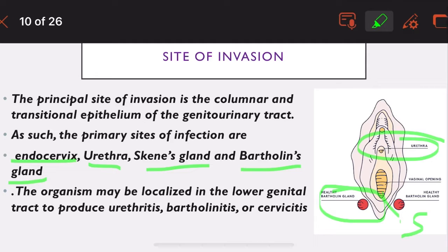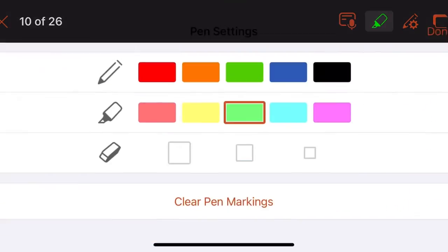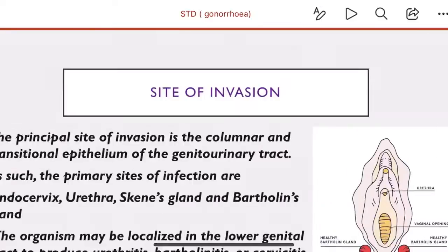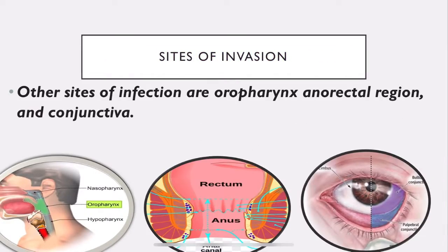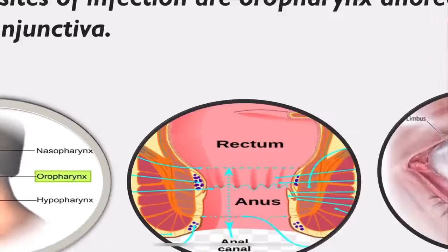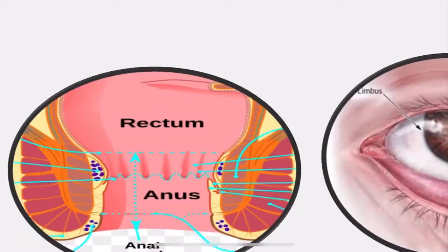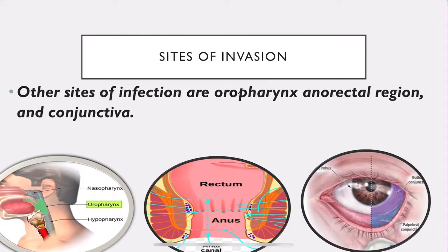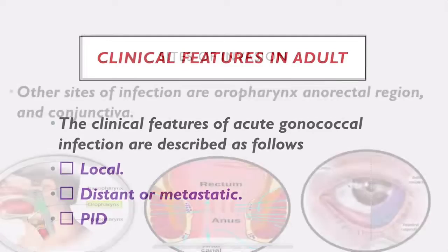The organism may be localized in the lower genital tract. Acting on the urethra it causes urethritis; acting on Bartholin's gland it causes inflammation of the glands; and on the cervix it causes cervicitis. Other sites of invasion include the oropharynx, the anorectal region, and the conjunctiva - via the blood it can also reach these distant sites.